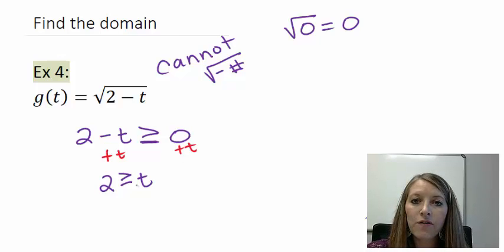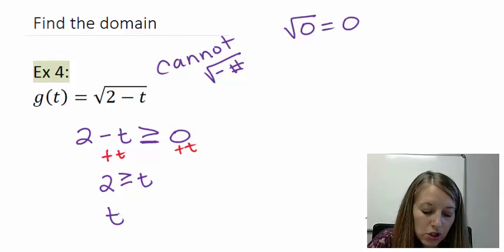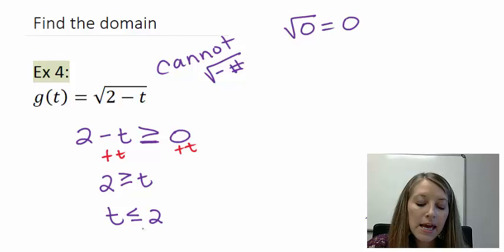Now we really prefer the variable on the left. It makes much more sense that way. So let me rearrange it. It is like holding a mirror up to it. That is like saying t is less than or equal to 2.